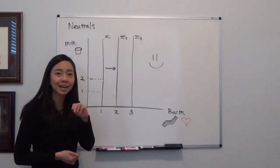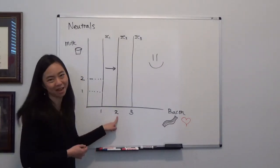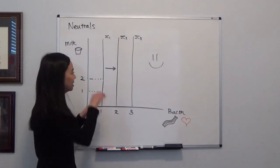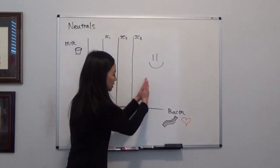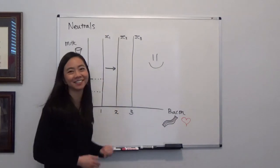But now if you give him two slices of bacon, that is going to make him happier. So you can see that the more you're moving to the right, when we have more bacon, the happier he is.